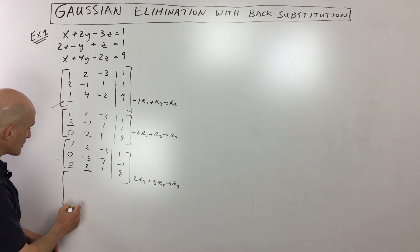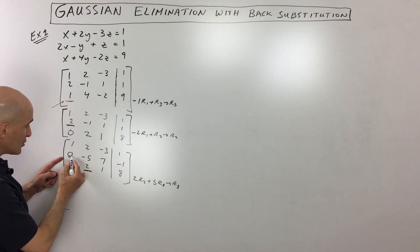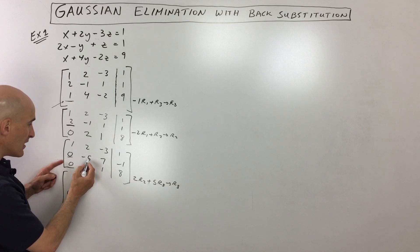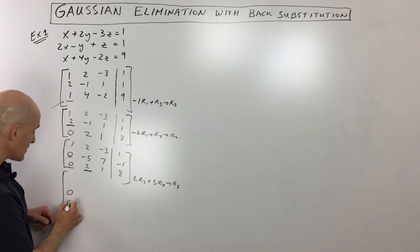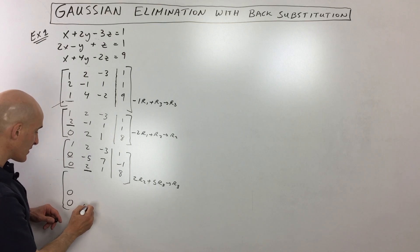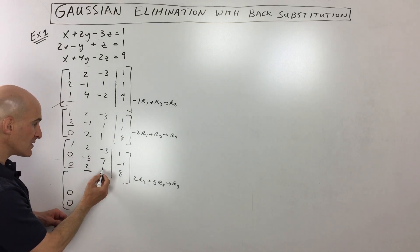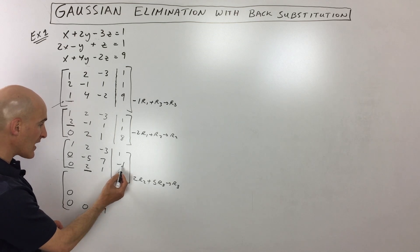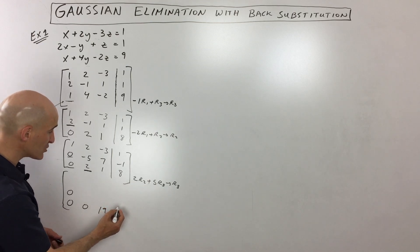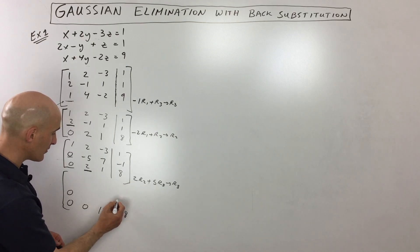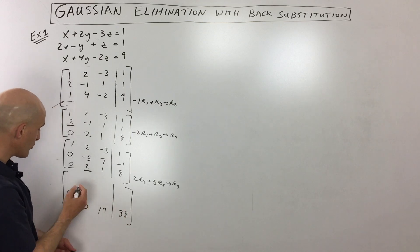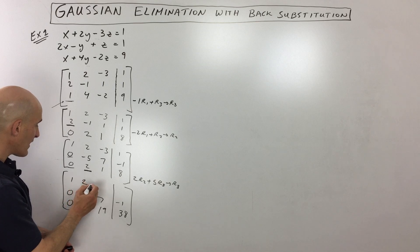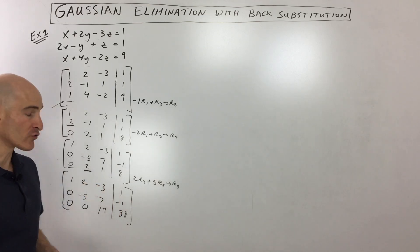So we're going to take two times row two: that gives us zero, then negative ten plus positive ten which gives us zero. Then fourteen plus five is nineteen, and over here we've got negative two plus forty which is thirty-eight. The other rows don't change so I'm just copying those down. It's a lot of writing but the nice thing is you don't have to write the variables over and over again. Now you can see we've gotten zeros in the lower left-hand corner.